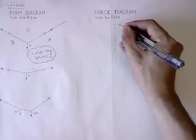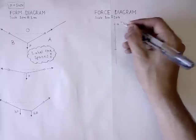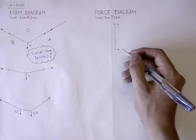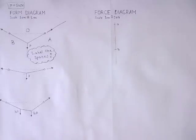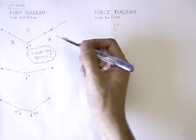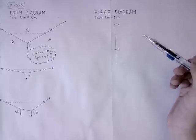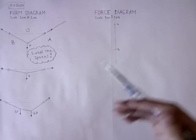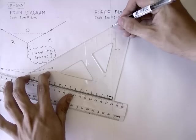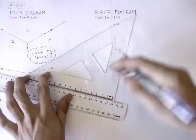Now label the points on the load line, starting with A. Remember, this works only if you have labeled your spaces in the clockwise direction. In the form diagram, this line runs between the spaces A and O. In the force diagram, it is going to run between the points A and O. Draw a parallel to it so that it goes through point A. Point O lies somewhere on this line.